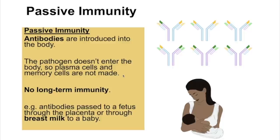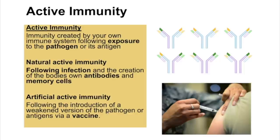Active immunity is when the immune system creates immunity following exposure to a pathogen — either naturally (following an actual infection) or artificially (via a vaccine, which introduces a weakened version of the pathogen or just the antigens). Passive immunity is when antibodies are introduced into the body rather than made by it — for example, antibodies passed to a fetus through the placenta or through breast milk. Because no plasma cells or memory cells are created in passive immunity, there is no long-term immunity.